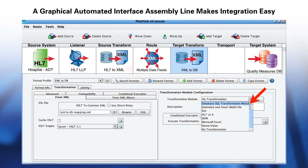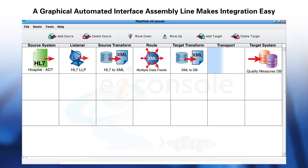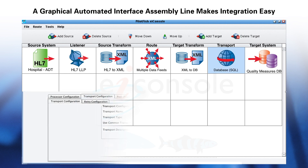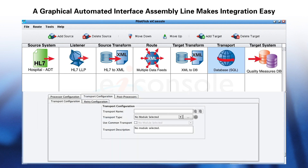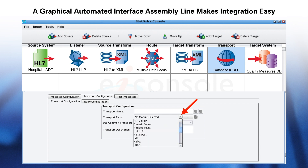In the Target Transform stage, you can perform transformations on your data to match what the receiving system requires. As with the Source Transform stage, you can select from built-in transformation modules to instantly read in your data, or use the EI Console's data mapper to map your data to the target format. Next is the Transport stage, where a configuration panel opens with a drop-down menu of over three dozen built-in transport adapters.